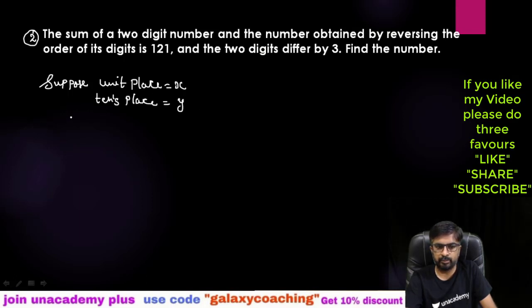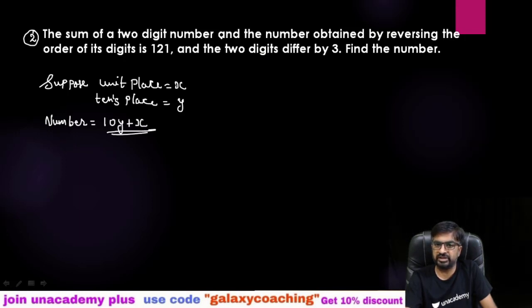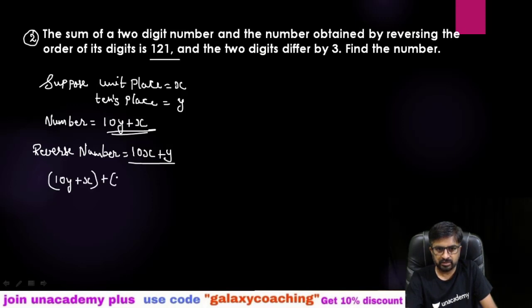So your full number, the two digit number will be tens place so 10y + x. Now they are telling the sum of a two digit number and the number obtained by reversing. So reverse number, this is your two digit number and this is your reverse number. Reverse number will be 10x + y. They are telling the sum of these two is 121. So 10y + x plus 10x + y equals 121. Open the bracket, like terms you need to add. So 10x + x is 11x and 10y + y is 11y equals 121.